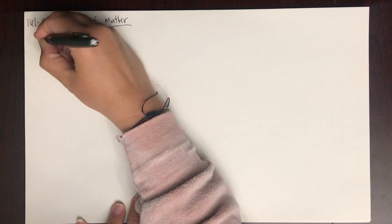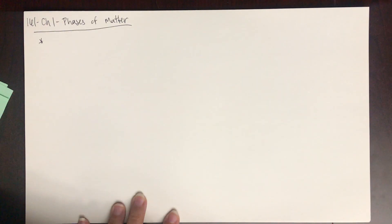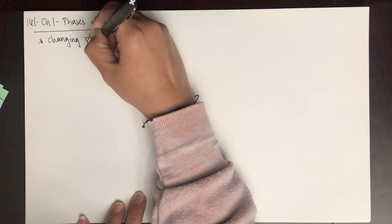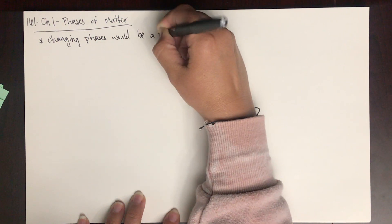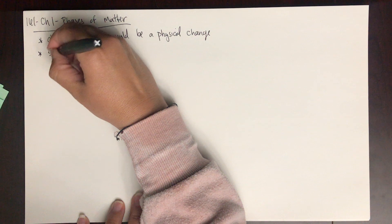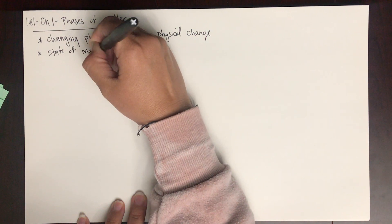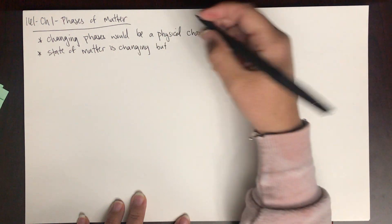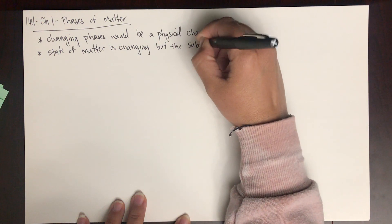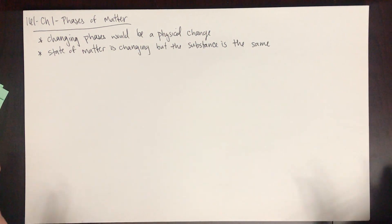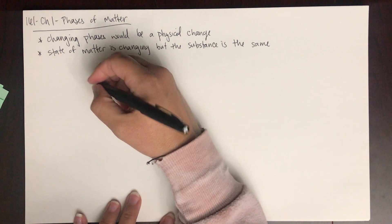The phase of water is a physical property. Changing phases would be a physical change because the state of matter is changing, but the substance is the same. For example, let's just use water. We'll look at solids, liquids, and gases of water.